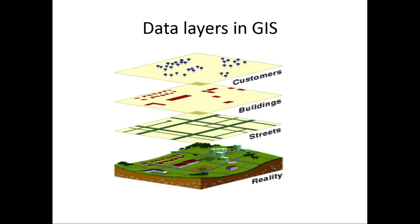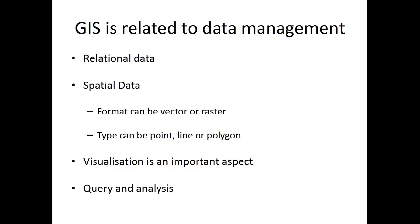Each theme can be a layer. For example, you can have the physical map of an area over which you lay streets, buildings, or even customers, as you can see here. These are all various attributes. So in effect, what is GIS? It is related to data management — it is a relational data management. The key aspect of GIS is spatial data. The format can be vector or raster. The type can be point, line, or polygon. Visualization is an important aspect. Query and analysis are important aspects related to GIS presentation, and its eventual use in decision making.